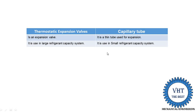The second point is that the thermostatic expansion valve is used in large refrigerant capacity systems — where the capacity of the system is large, the expansion valve is used. When the refrigerant capacity is small, we use the capillary tube.